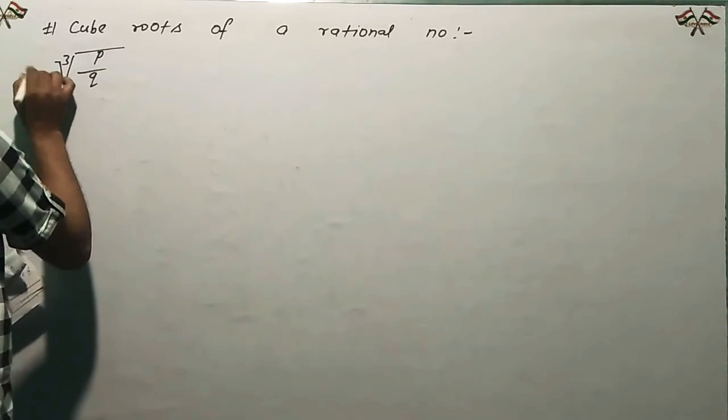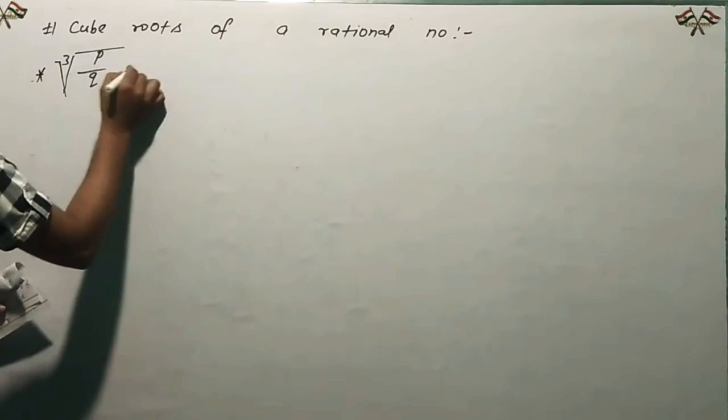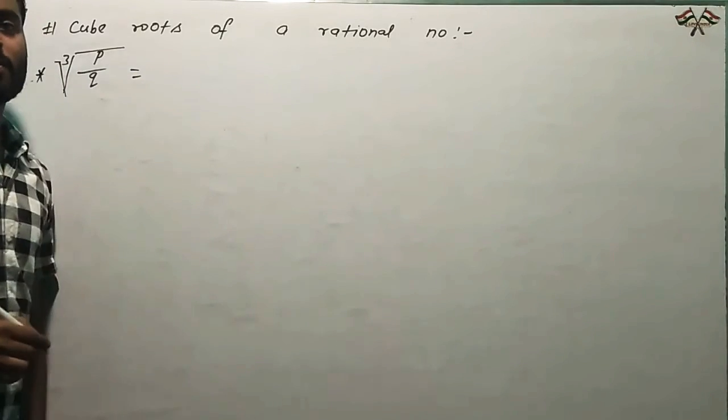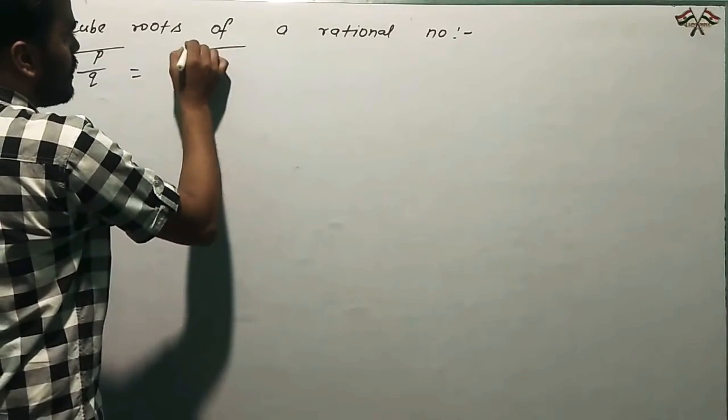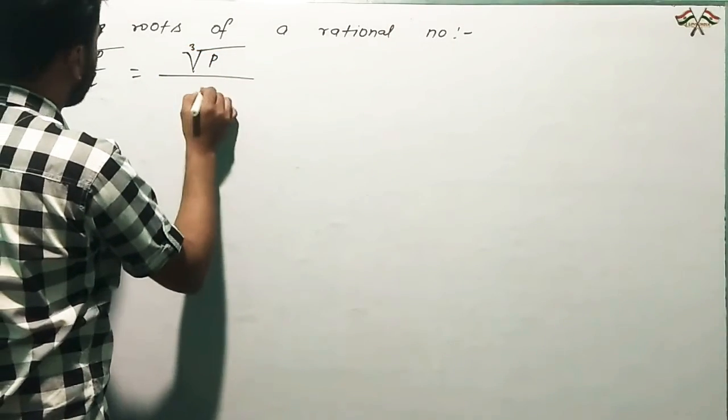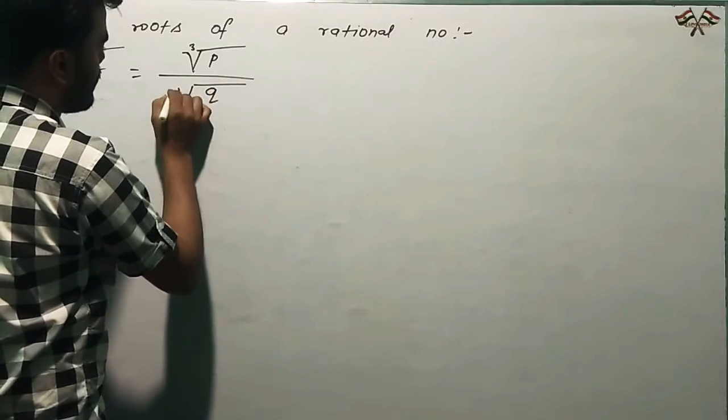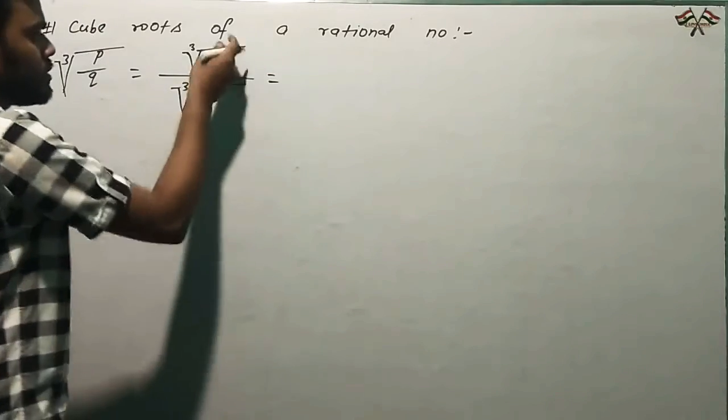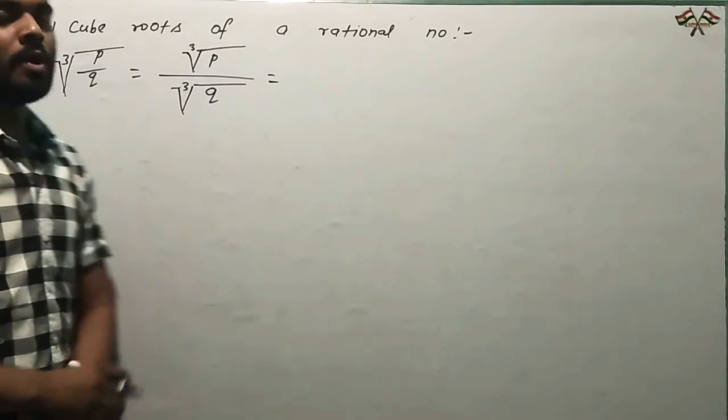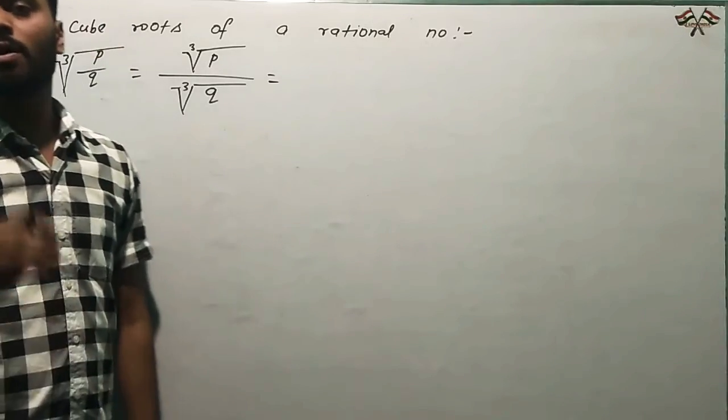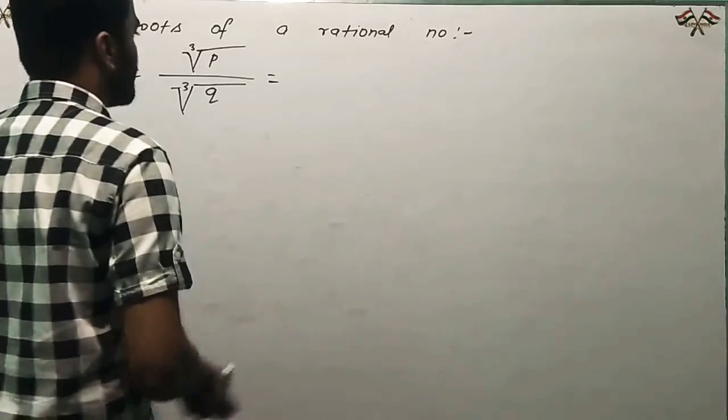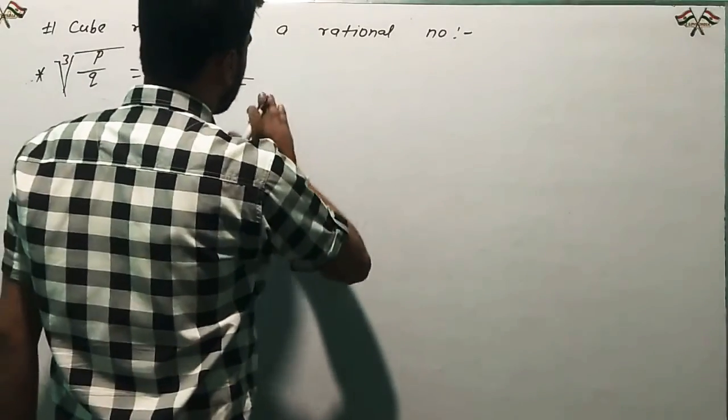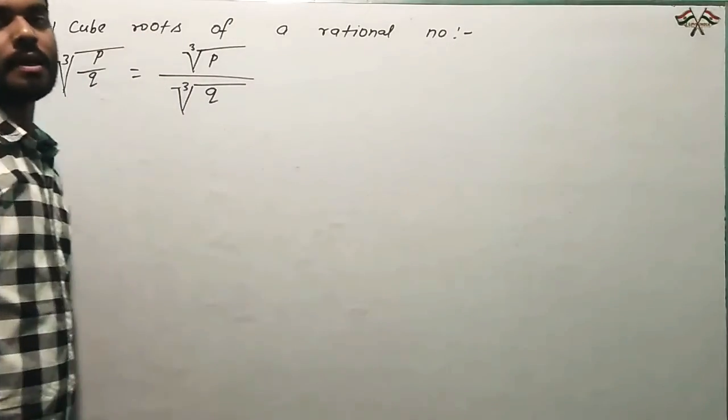To find out the cube root, you need to separate it. You can write it in this manner and separate the numerator and denominator. Otherwise, you can separate it again and then find out the cube roots.